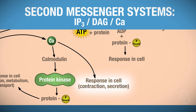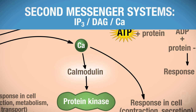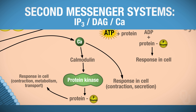Calcium can automatically cause a response inside of the cell, such as skeletal muscle contraction, which you'll learn the mechanism for later. Or calcium can bind to calmodulin — this is dependent on what tissue type you're in. If calcium binds to calmodulin, that activates protein kinase. Protein kinase then phosphorylates a protein, and when you phosphorylate a protein, you get some sort of response inside of the cell. That's the IP3 and calcium second messenger system.